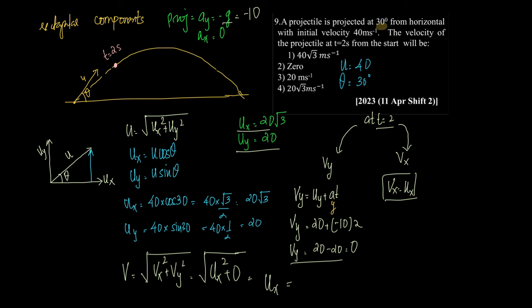And what is the value of ux? ux is 20 root 3. So we have 20 root 3. Therefore, the correct option is 20 root 3.